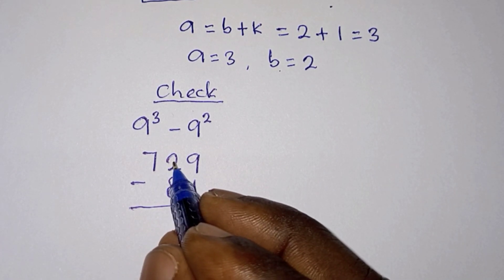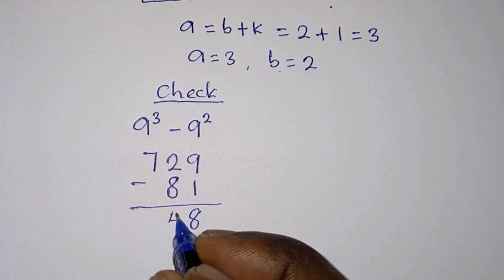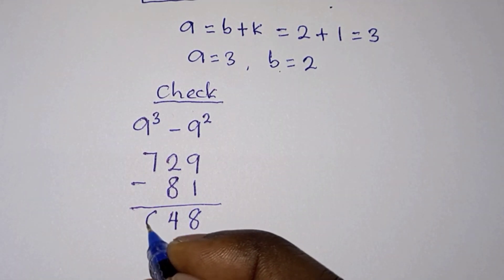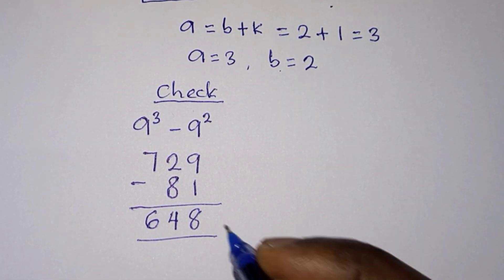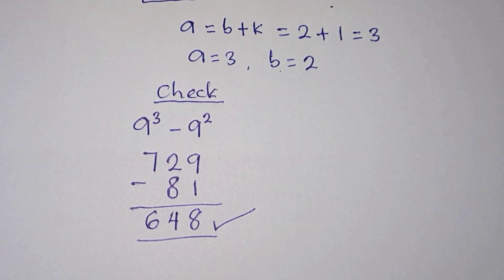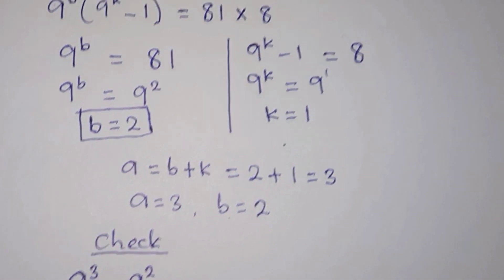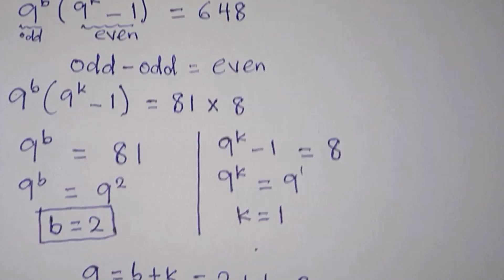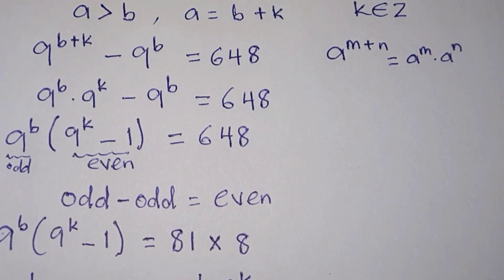Computing 729 minus 81: we get 648. So indeed 9 to the power a minus 9 to the power b equals 648 when a equals 3 and b equals 2. The answer is confirmed.